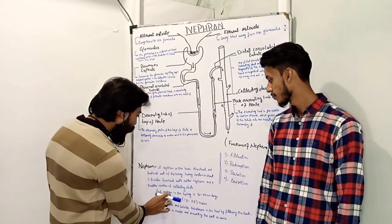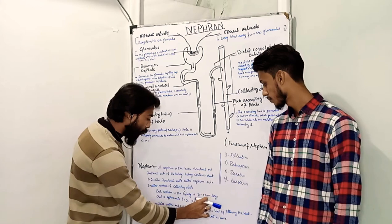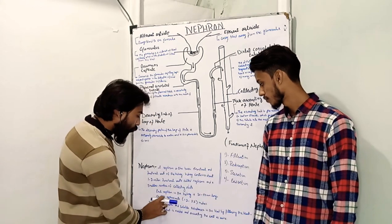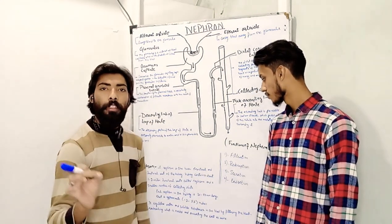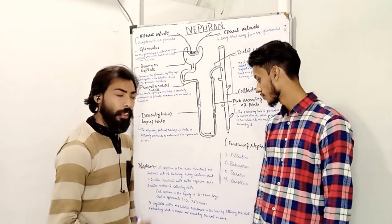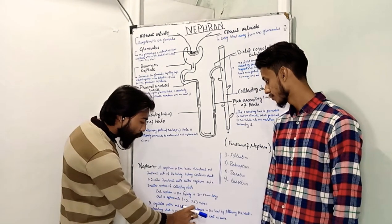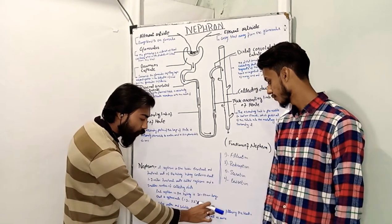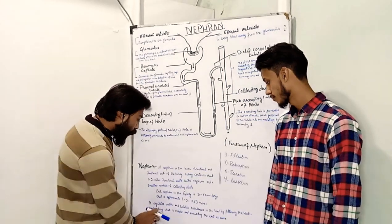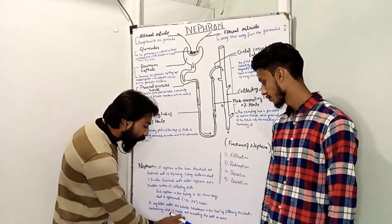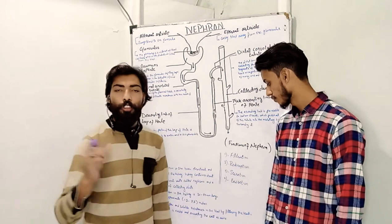Each nephron in the kidney is 30 to 55 mm long, that is approximately 1.2 to 2.2 inches. It regulates water and soluble substances in the blood, reabsorbing what is needed and excreting the rest as urine.